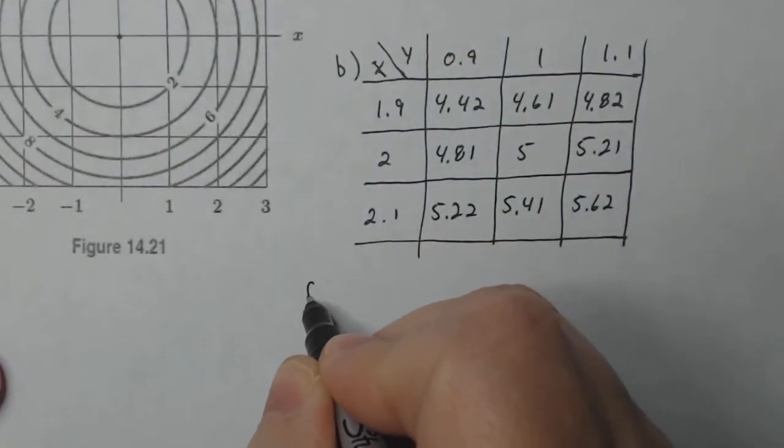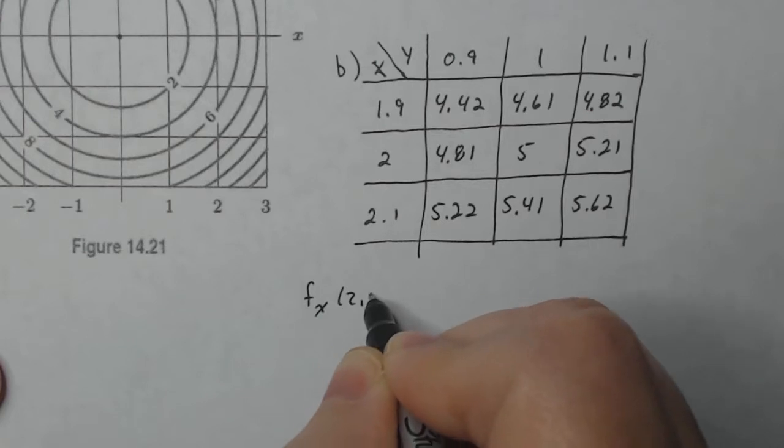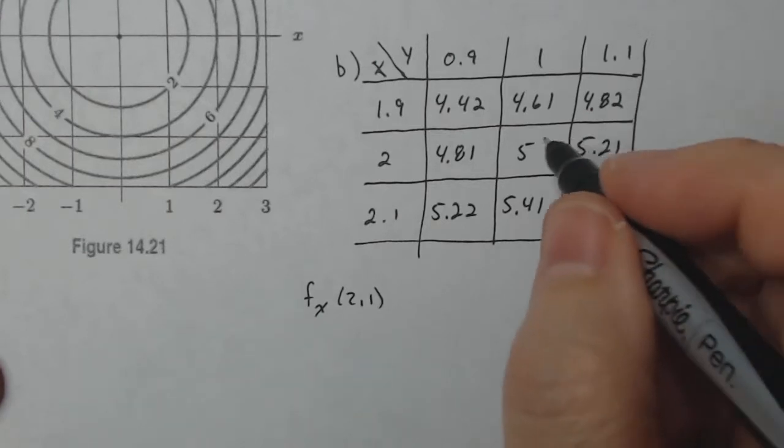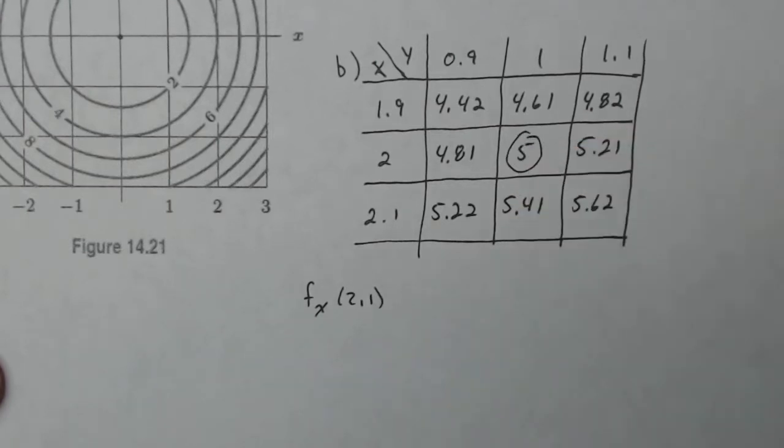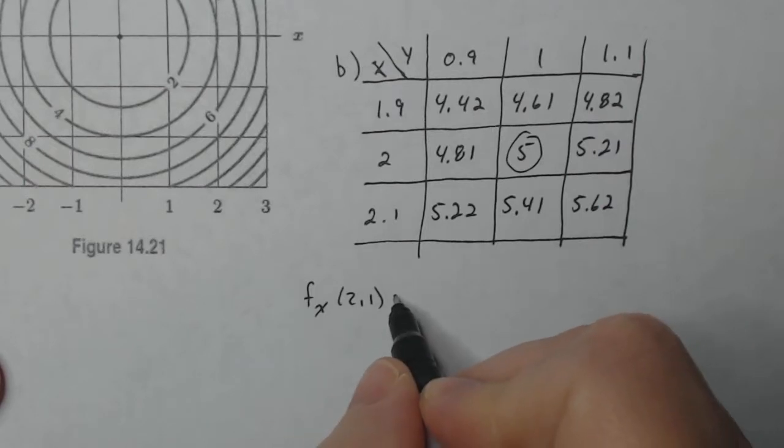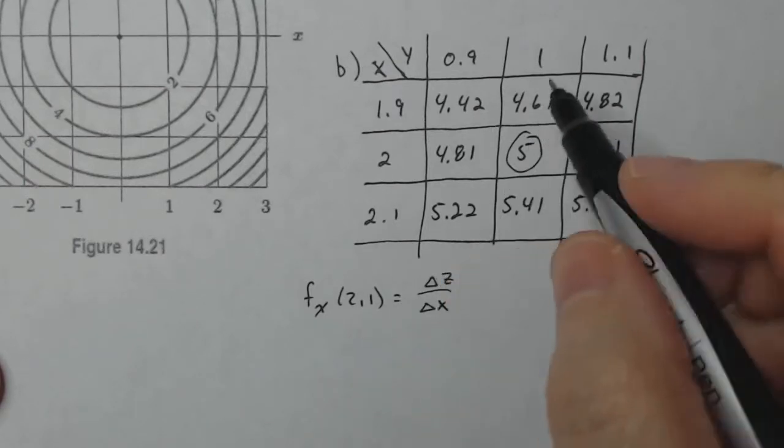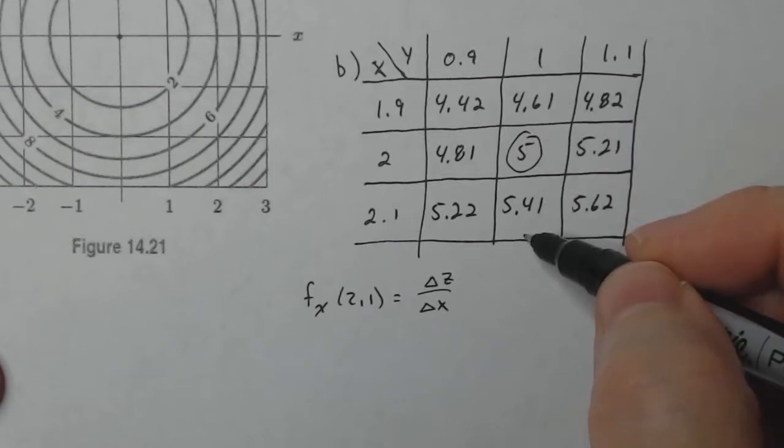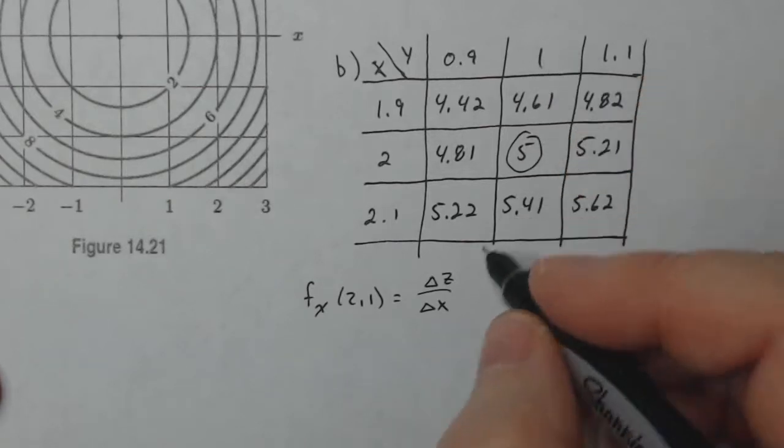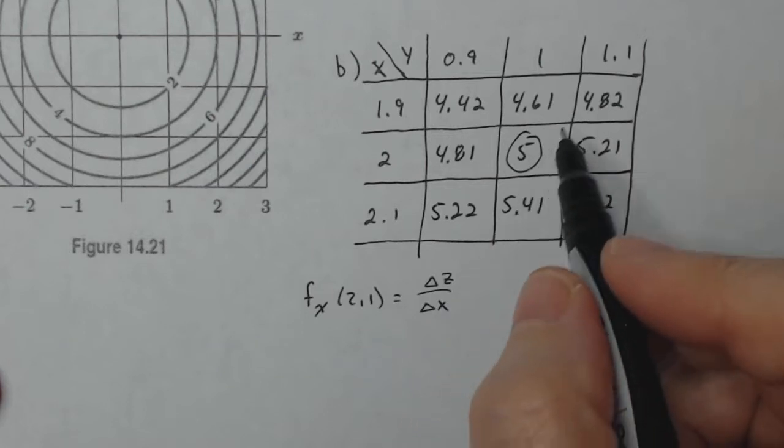But then if I want to estimate f sub x at two one, I have to go to that position here on the map. And I always write this down, the change in Z over the change in X. So X is the thing that's changing, Y stays fixed.